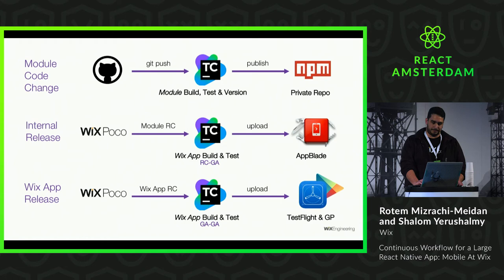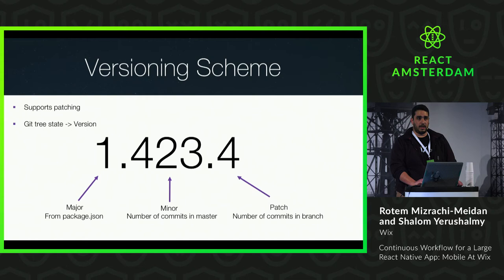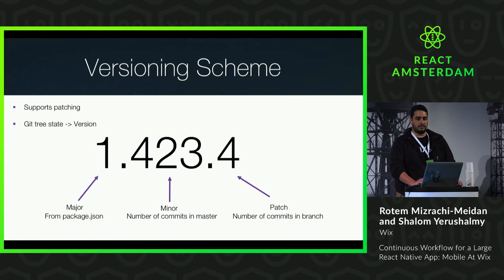We use a versioning scheme that supports patching, because life sucks and sometimes you have bugs and need to create hot fixes. We do that by creating a branch from a previous release of a certain module. A version is automatically calculated: major is from the package.json, minor is the number of commits in master, and patch is the number of commits in a certain branch since diverging from master — so if the build is master, patch will be zero. When building the app, we keep a shrink wrap file containing all the resulting module versions. When we need to release a hot fix, we use that shrink wrap state and only change patch versions of the patched modules.